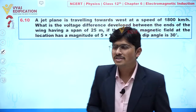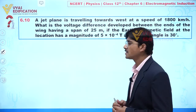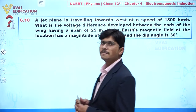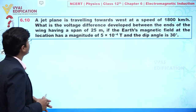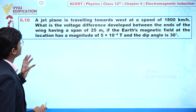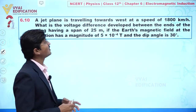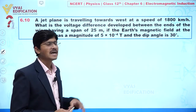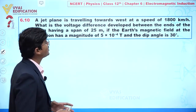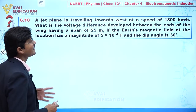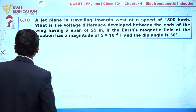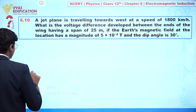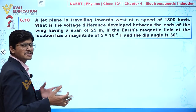Students, we are going to discuss question number 6.10. In this question, it is given that a jet plane is traveling towards west at a speed of 1800 kilometers per hour.